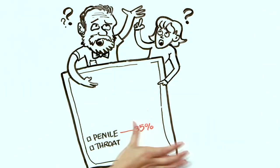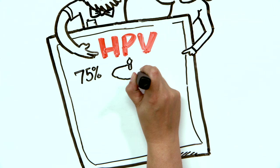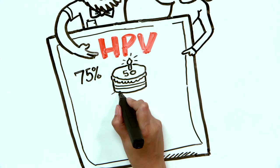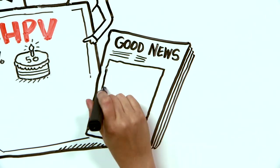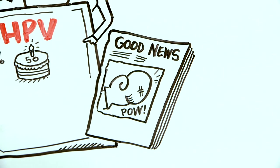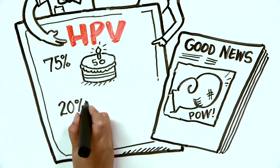What is not commonly known is that about 75% of sexually active people have HPV by the time they're 50. The good news is that most of the time, our bodies actually fight off HPV, just like any other virus.